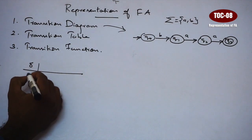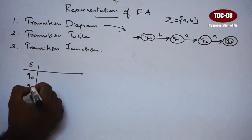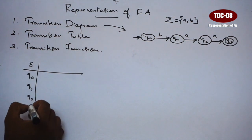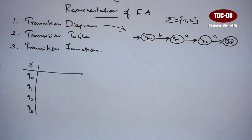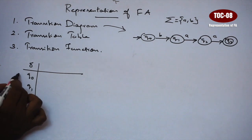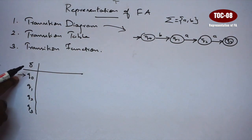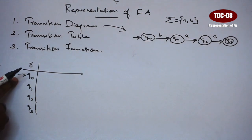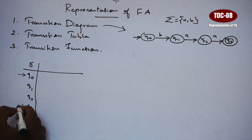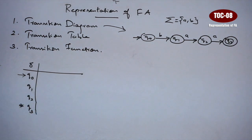On the left side, the states — Q0, Q1, Q2, Q3 — all states are listed. You should mention the initial state completely. For the final state, you should put a star, and you should put a double circle here. So the final state is indicated this way.